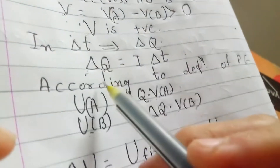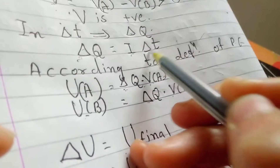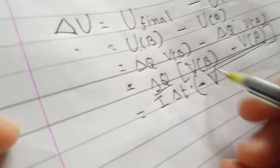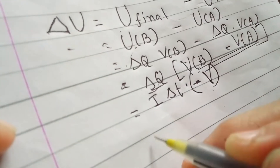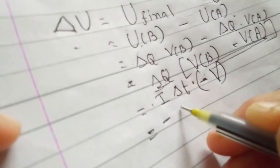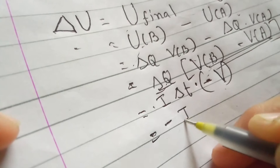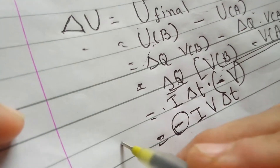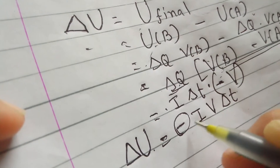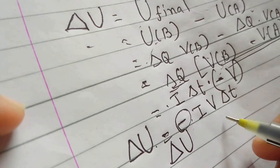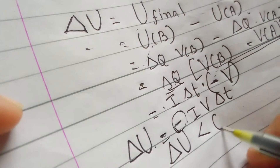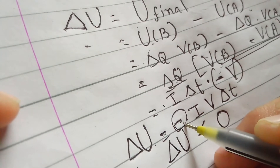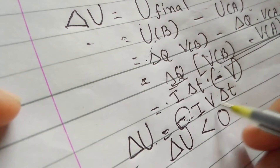Now ΔQ is equal to I·ΔT. Substituting, ΔU equals I·ΔT into (−V), which gives ΔU equals −IV·ΔT. The negative sign means the change in potential energy is negative — that is, the final potential energy is less than the initial potential energy.